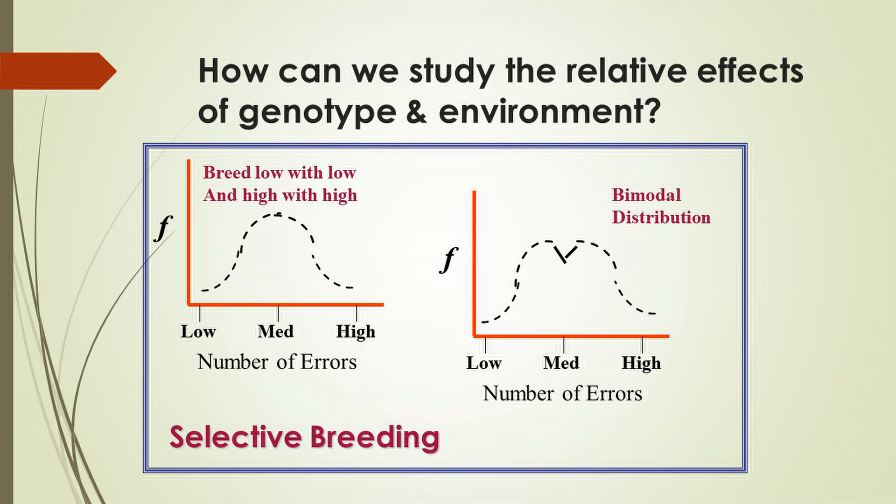Instead, what we want to ask is how can we study the relative effects of genotype or genetic inheritance and environment on the development of behavior — not assuming that it's one or the other. It's always both, but we can study how much each one of those influences the development of behavior.